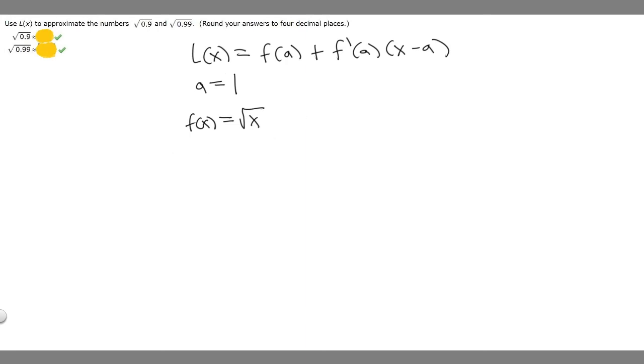With these in mind, now we can actually solve. L(x) is going to equal f(x) with respect to a, so it's our function f(x) but we replace x with a, which is √1, plus the derivative of f(x) with respect to a.